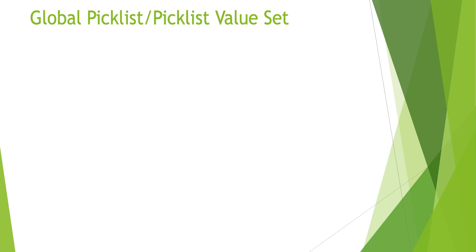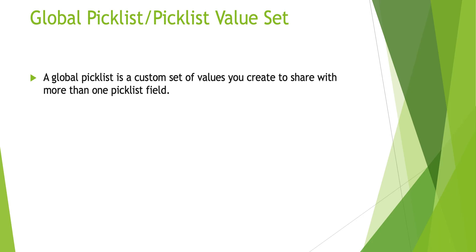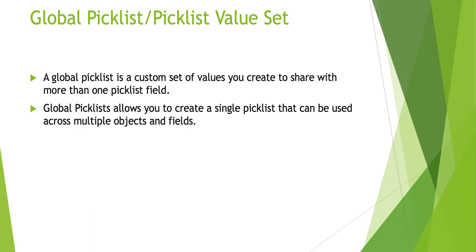And how to promote a custom picklist as global picklist. Let's start with: what is global picklist? Global picklist is a custom set of values that you create to share with more than one picklist field. These are custom picklists that we create in Salesforce. They allow us to define a set of standardized picklist values that can be used across multiple objects and fields in the org. The basic point is sharing a single set of values across many custom picklist fields.